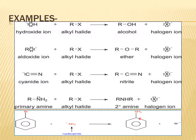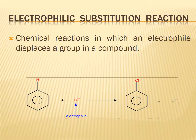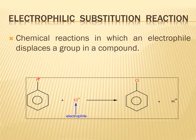Next is the electrophilic substitution reaction — a chemical reaction in which an electrophile displaces a group in a compound. You can remember electrophile with E-P: electrophile carries a positively charged ion. This positively charged ion reacts with the compound to form chlorobenzene. This is the electrophilic substitution reaction.